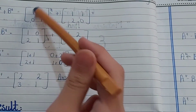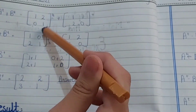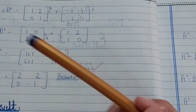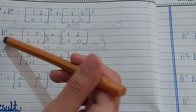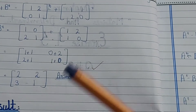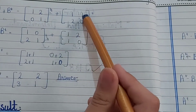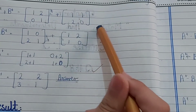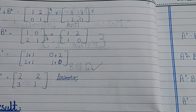For A transpose: the column [1,0] becomes a row, giving A^T = [1,0;2,1]. Then for B transpose: row [1,1] becomes a column, row [2,0] becomes a column, giving B^T = [1,2;1,0].